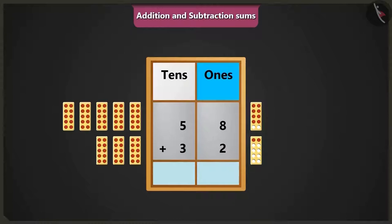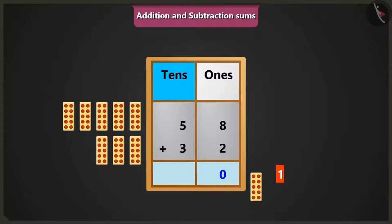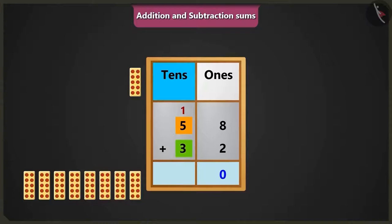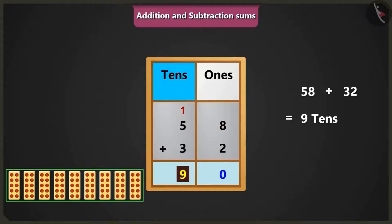Now if we add the numbers 8 and 2 in the ones box, after 8 it will be 9 and 10. There are 0 ones and 1 ten in 10, so we put 0 in the ones place and carry over 1 to the tens place. Now if we add 5 and 3 in the tens box, it will be 6, 7, 8 tens. Adding the carried-over 1 to 8 tens gives 9 tens. So 9 tens means 90 rupees.